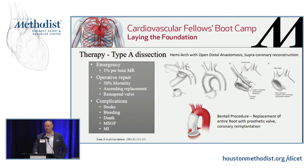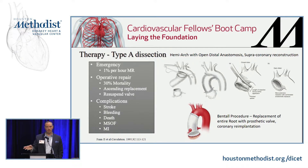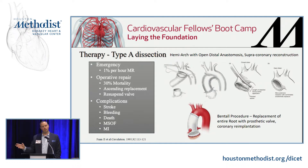Type A is a 1% per hour emergency. In general across the U.S., there's somewhere between a 20% to 30% mortality rate. A lot of it depends upon which vessels are involved — if the coronaries or brachiocephalic vessels are involved, your mortality increases significantly.